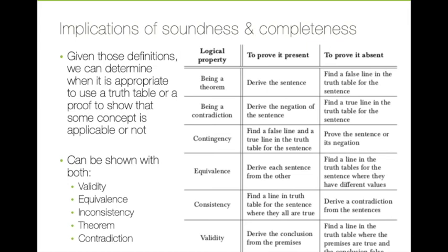What do we do with these equivalences from soundness and completeness? Given those definitions, we can determine when it's appropriate or helpful to use either a truth table or a natural deduction proof to show that some concept is applicable or not. Another table from chapter 21 shows when we should use a truth table and when we should use a proof. Some of these can be shown with either method — this applies to showing that an argument is valid but not invalid, that two sentences are equivalent, that a set of sentences is inconsistent but not consistent, and that a sentence is a theorem or a contradiction.